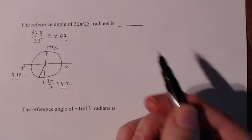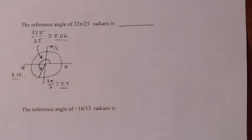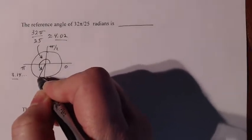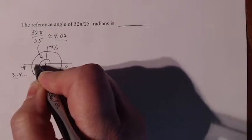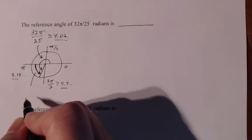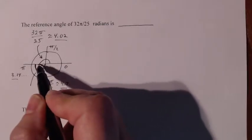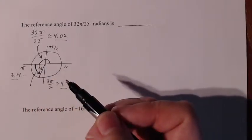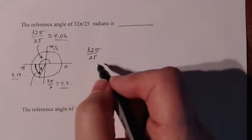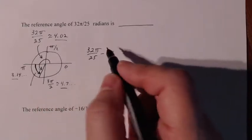I'm going to approximate the terminal side to be right there, and that angle is 32π over 25. Now the reference angle is the acute angle between the terminal side and the horizontal axis — that's an acute angle, meaning it's between zero and π over 2. I need to figure out that angle. So I take 32π over 25 and subtract π, and that leaves just a bit — that's going to be my reference angle.